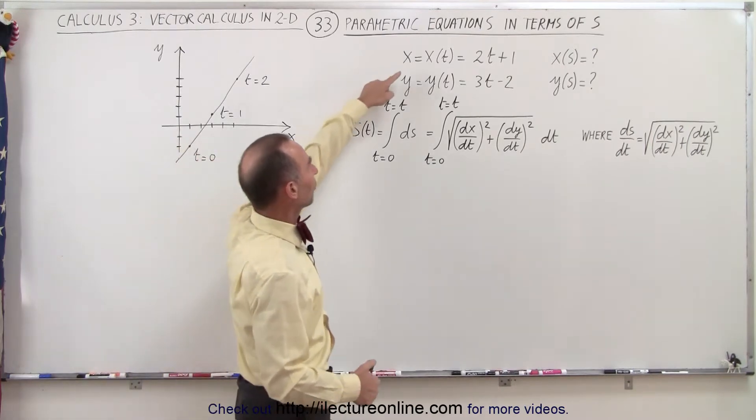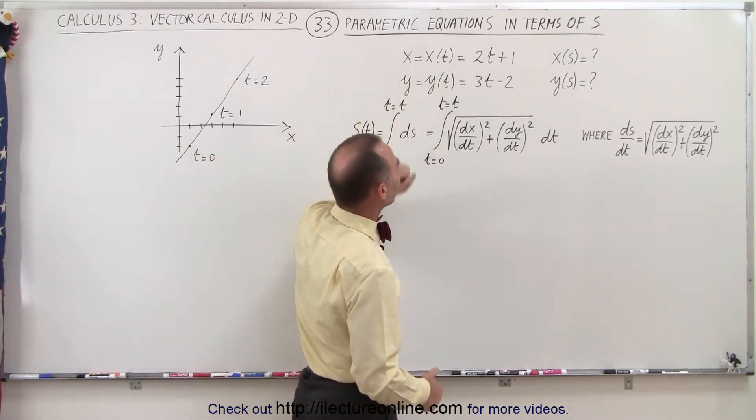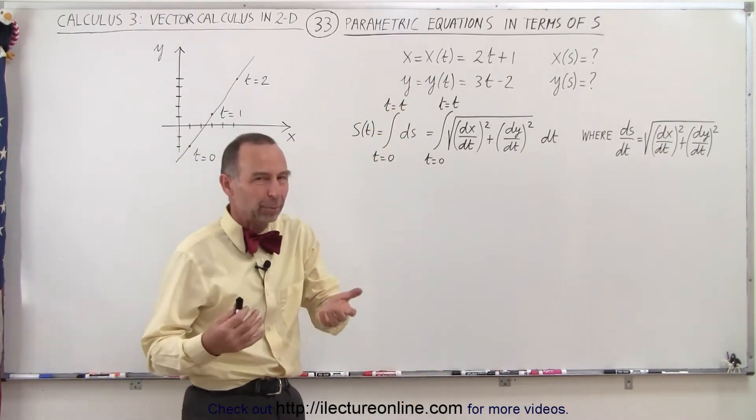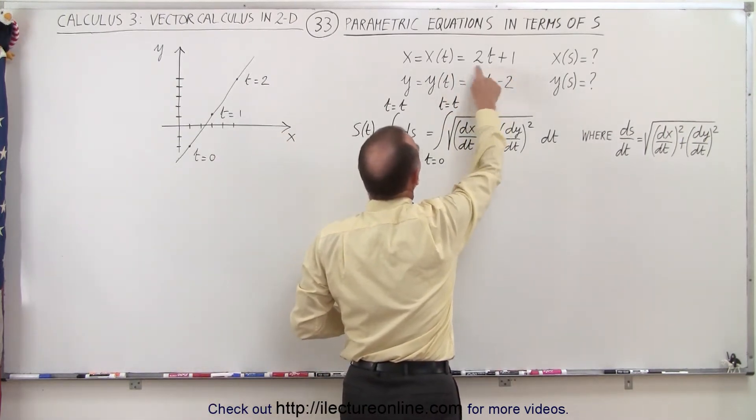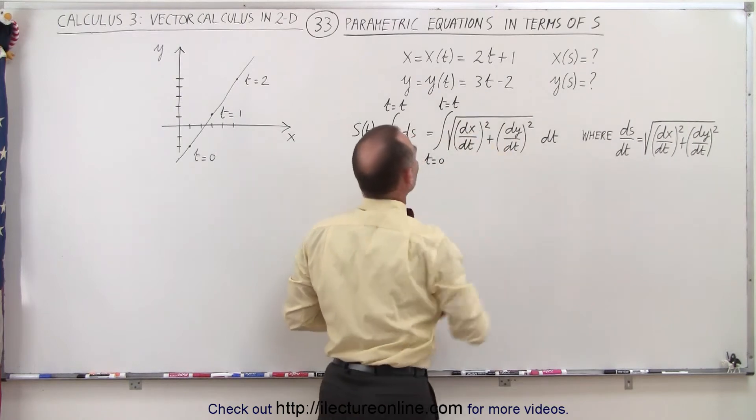So in this case, we have x as a function of t and y as a function of t. And let's say that in this particular example, the function for x is equal to 2t plus 1 and for y it's equal to 3t minus 2.